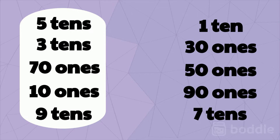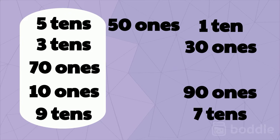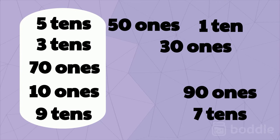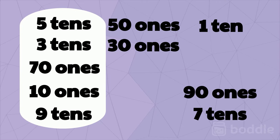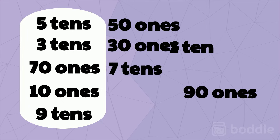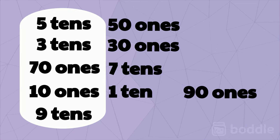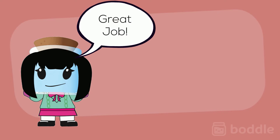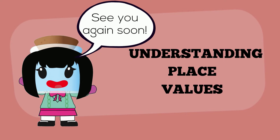Now let's try converting between tens and ones. Match the tens to the ones or the ones to the tens: five tens is equal to fifty ones, three tens is equal to thirty ones, seventy ones is equal to seven tens, ten ones is equal to one ten, and nine tens is equal to ninety ones. Great job working with place value — see you again soon!